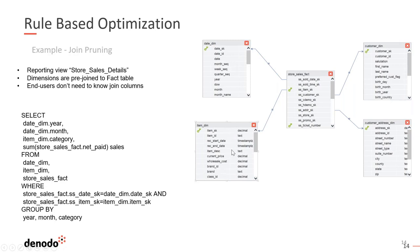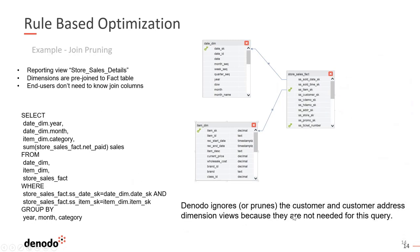The query we're submitting is fairly simple — we just want to know what the total sales were, aggregated by year, month, and category. Year and month come from the date dimension, and category comes from the item dimension. But notice there's nothing in this query that references the customer dimension or customer address. So the rule-based optimizer is going to execute something called join pruning — Denodo will ignore or prune the customer and customer address dimensions because they're not needed. Even though our view is made up of five underlying base views, Denodo knows we can ignore two of them and only needs to query three.